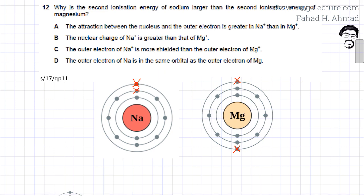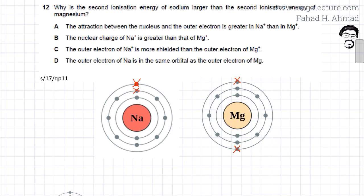Looking at the options now — option A states that the attraction between the nucleus and the outer electron is greater in Na⁺ than in Mg⁺. This looks perfectly correct because the second electron in sodium is very close to the nucleus, so the attraction would be greater.